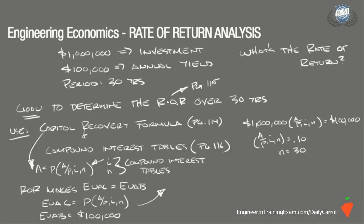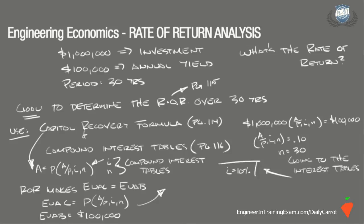Referencing the compound interest table starting on page 118 of the NCEES Supplied Reference Handbook, relocate the period N equals 30, which is the far left column, and work our way horizontally to the (A/P) column in each table to determine which one has the value of 0.10. Doing this, it is determined that the closest interest rate is 10%. So the rate of return for this investment is 10%.